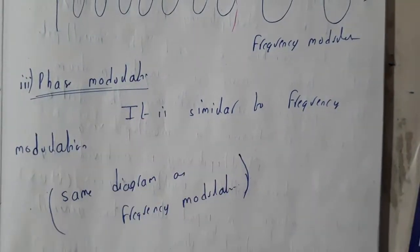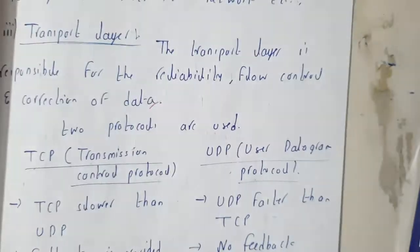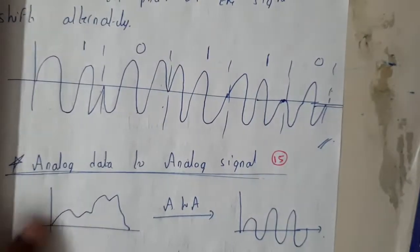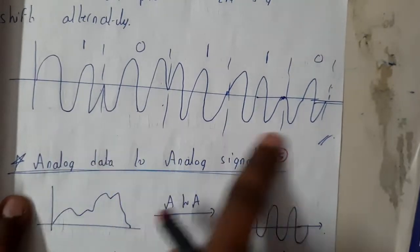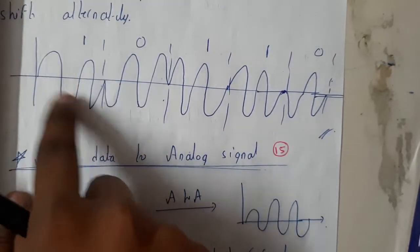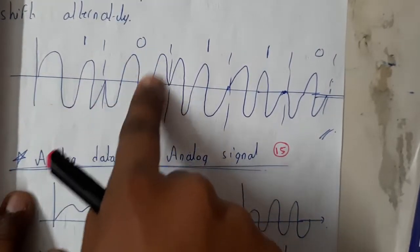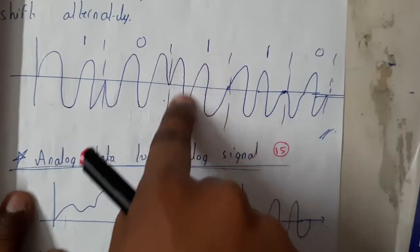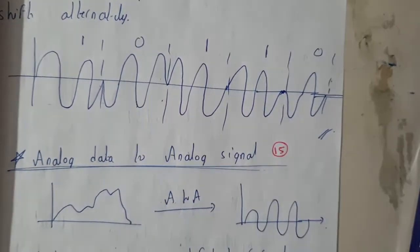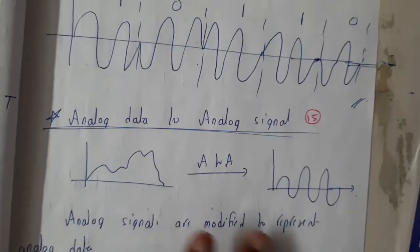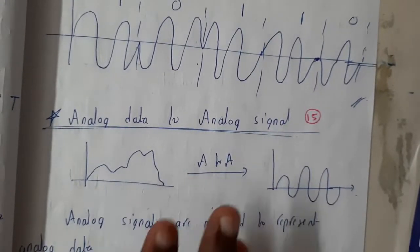Phase modulation is similar to frequency modulation. The phase will be in this way — if it is one it will be incrementing, and if it is zero it goes in the opposite direction; if it is one it continues in the same direction. That is how phase modulation works.